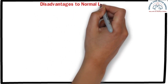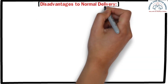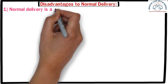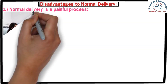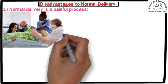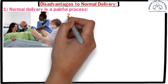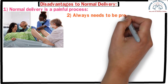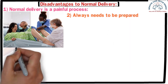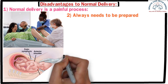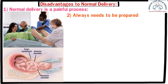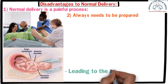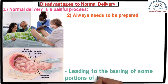However, there are some disadvantages to normal delivery as well. Number one: normal delivery is a painful process, which leads to fear and anxiety for almost all women, though many methods are available nowadays to reduce pain. Number two: one always needs to be prepared because labor pain can start at any time. Number three: during normal delivery, sometimes the baby's head might get stuck, leading to tearing of some portion of the birth canal, known as a perineal tear. Stitching is required to heal the tear and recovery can be delayed.